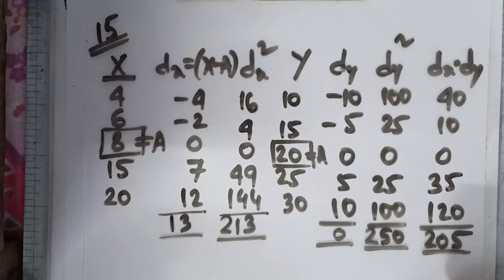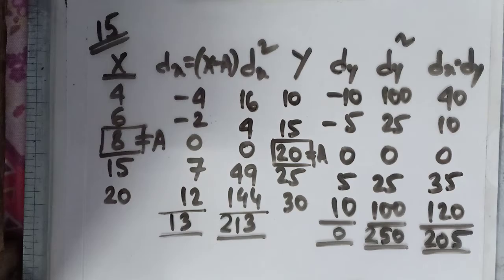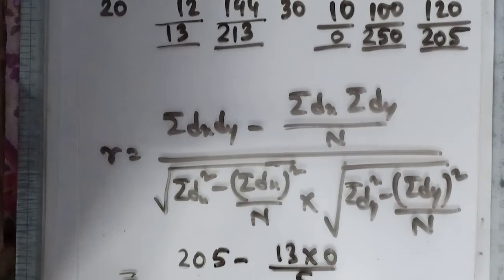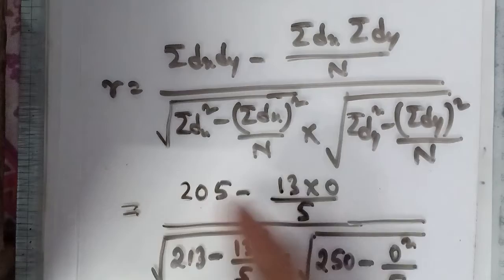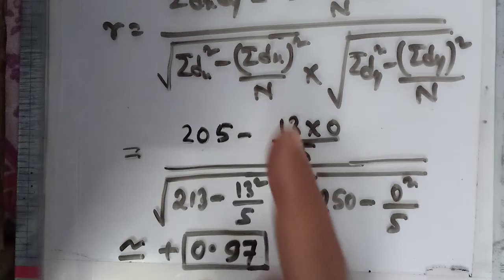Once you have got all these values calculated, the data total calculations done, come to the formula of the shortcut method. The formula says, put the values: summation dx dy is 205.